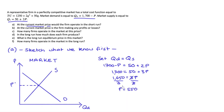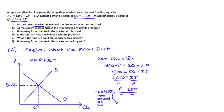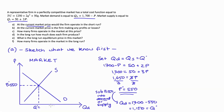This is our equilibrium price, P star equals 550, and I'm going to put that on my diagram. I'll also find our equilibrium market quantity Q star, which I'll need later. Substituting the price of 550 into the demand equation: Q_D equals 1700 minus 550 equals 1150. So our equilibrium market quantity Q star is 1150, and I can put that on my diagram.